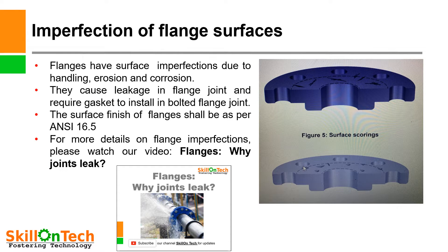Imperfection of flange surfaces: As we discussed, flanges always have some imperfections. Flanges have surface imperfections due to handling, erosion and corrosion. They cause leakage in flange joints and require a gasket to install in the bolted flange joint. The surface finish of flanges shall be as per ANSI 16.5. You can see a picture of flange faces where surface scorings are visible — these occur during handling or due to erosion and corrosion. Therefore, a gasket is required in the mating surfaces to prevent leakage.